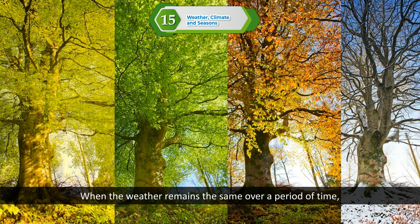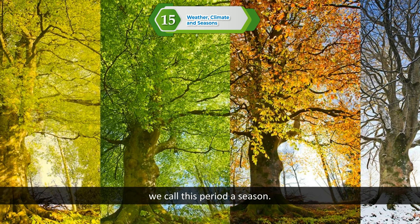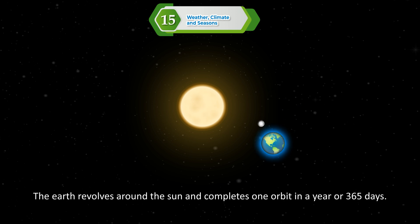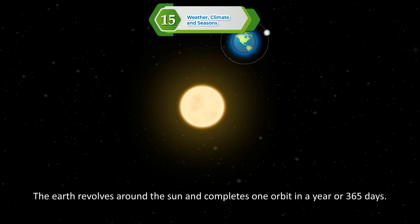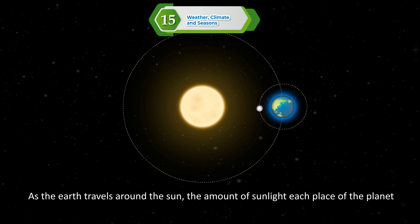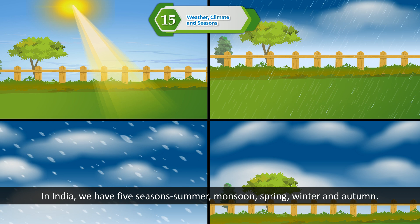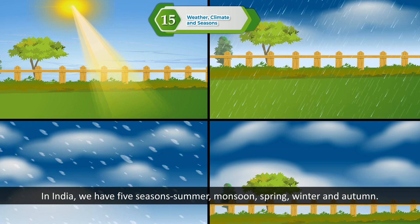Seasons. When the weather remains the same over a period of time, we call this period a season. The Earth revolves around the Sun and completes one orbit in a year, or 365 days. As the Earth travels around the Sun, the amount of sunlight each place on the planet gets changes gradually every day. This change causes the seasons. In India, we have five seasons.